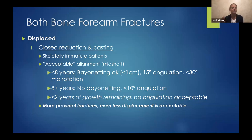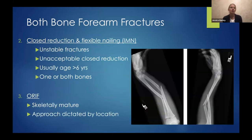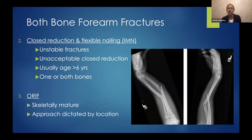Kids with less than two years of growth remaining — essentially you cannot accept any angulation. A good option for younger patients with an unacceptable closed reduction is flexible nailing, either closed or open reduction depending on ease of reduction, nailing one or both bones. Going back later to remove the flexible nails — I usually do that around a year, at least six months. In skeletally mature patients, treat them like an adult: open reduction and internal fixation.